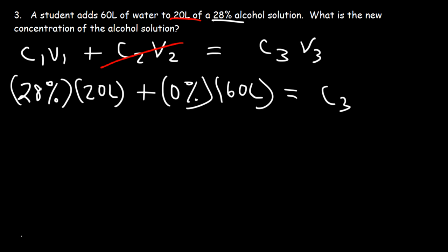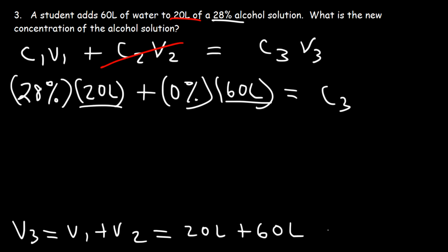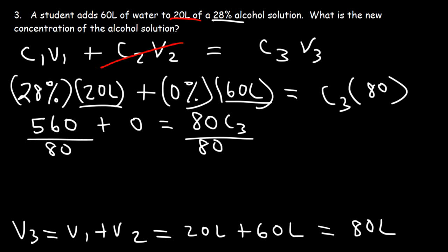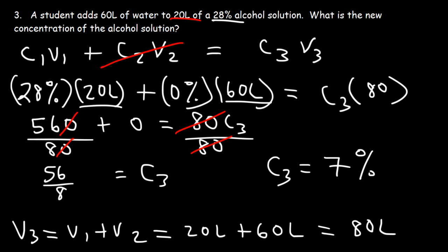Now what's V3? V3 is V1 plus V2 — the sum of 20 liters plus 60 liters — so the final volume is 80 liters. Let's replace V3 with 80. Now, 28 times 20 is 560. Zero times 60 is zero. And that's equal to 80·C3. So let's divide both sides by 80. We can cancel a zero: 80 divided by 80 is 1, so C3 is equal to 56 divided by 8, which is 7. So C3 has a concentration of 7% — that is the concentration of the new alcohol solution.